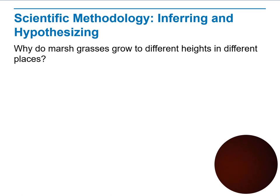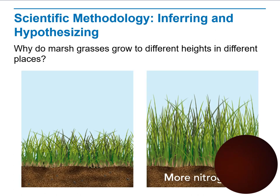Scientific methodology involves inferring and forming a hypothesis. You need to make a hypothesis. For example: why do marsh grasses grow to different heights in different places? When you look at the picture, you will understand that the height of the grass in location A was much less than in location B. The difference in grass growth height between locations leads you to ask the question: why is the grass in A shorter than in B? You start to form a hypothesis — questioning why this is happening.